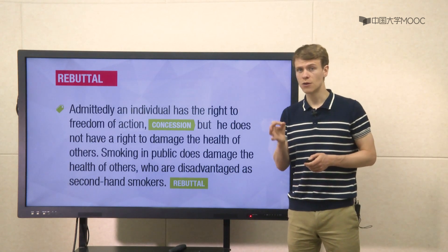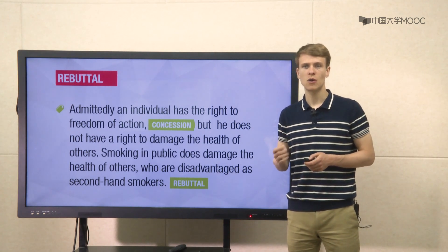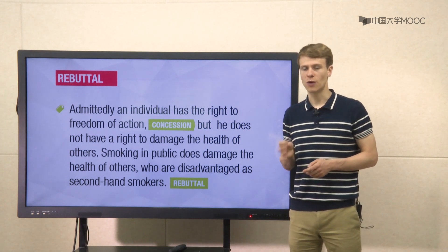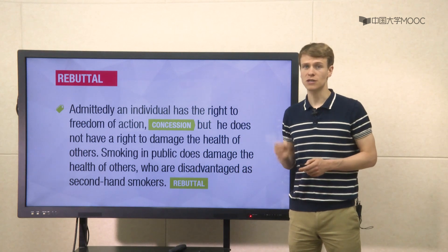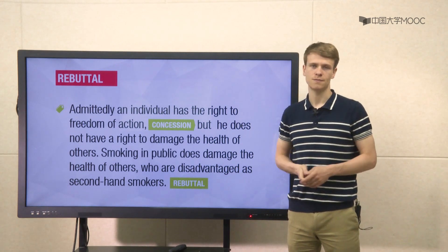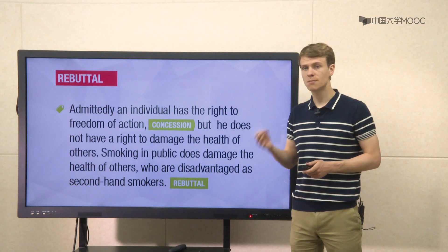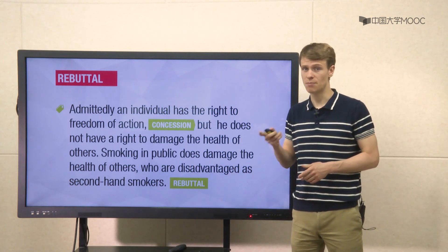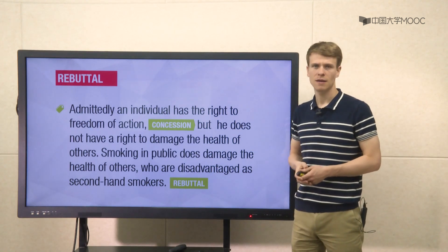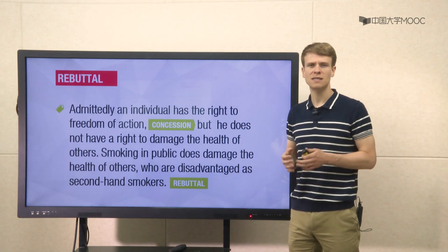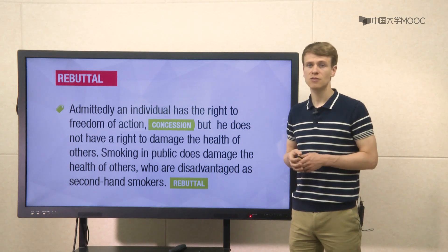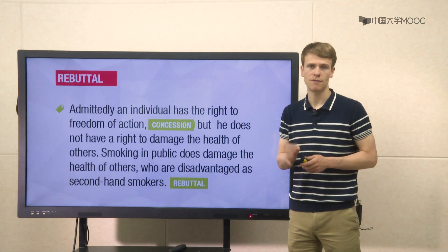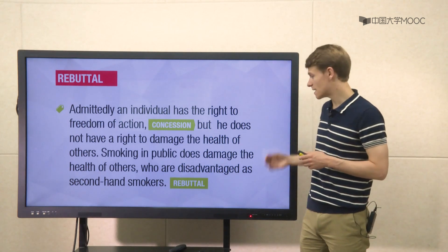A concession is usually followed by a rebuttal. For instance, consider the topic of smoking in public places: admittedly, an individual has the right to freedom of action, but he does not have a right to damage the health of others. Smoking in public does damage the health of others, who are disadvantaged as second-hand smokers. Here, the author acknowledges the opposing point of view by stating that an individual does have a right to freedom of action. After conceding the opposing argument, the author immediately argues his stance. By conceding with 'admittedly,' the writer seeks common ground with the intended audience. Signalled by the contrastive marker 'but,' the rebuttal negates the false implications of the previously mentioned belief. The rebuttal is then supported with second-hand smoking facts as evidence.